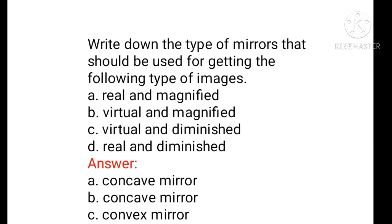Write down the type of mirrors that should be used for getting the following types of images. For a virtual and diminished image, use a convex mirror. For a real and magnified image, use a concave mirror. The third option — virtual and diminished — also corresponds to a concave mirror.